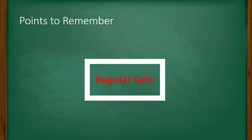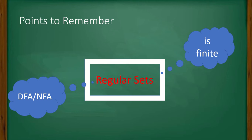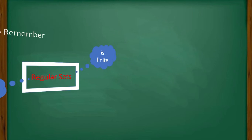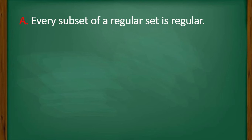To answer this question, you must remember these points about regular sets. If there is a regular set, it must be finite. And if a set or language is finite, we must be able to generate some finite state machine for this language — these are nothing but some DFA or NFA.